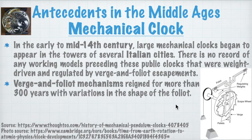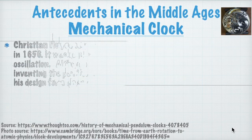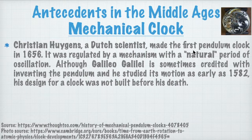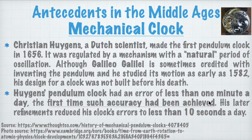These foliot escapements reigned for more than 300 years with variations in the shape of the foliot, but these mechanisms were not very accurate — there was a lot of time being lost. Scientists needed to improve this, and Dutch scientist Christiaan Huygens made the first pendulum clock in 1656, regulated by a mechanism with a natural period of oscillation. Although Galileo Galilei is sometimes credited with this invention — he studied pendulum motion as early as 1582 — his design for a clock was not built before his death.